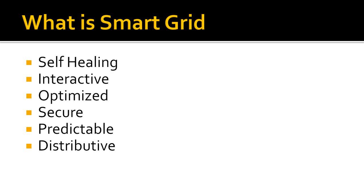The smart grid must support the connectivity of distributed generation to the power grid. It will reduce peak demands from central generation plants and will improve the power quality and reliability of the power system. The consumer will also have more choice and control, lowering costs of electricity. There will also be environmental benefits as renewable generation will be utilized powering homes and offices.